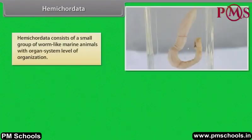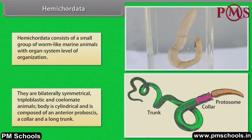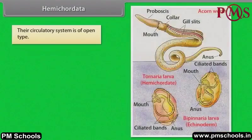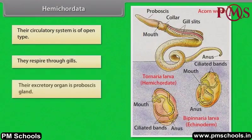Hemichordata consists of a small group of worm-like marine animals with organ system level of organization. They are bilaterally symmetrical, triploblastic and coelomate animals. Body is cylindrical and is composed of an anterior proboscis, a collar and a long trunk. Their circulatory system is of open type. They respire through gills. Their excretory organ is the proboscis gland.